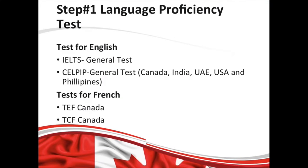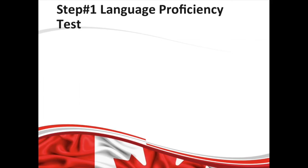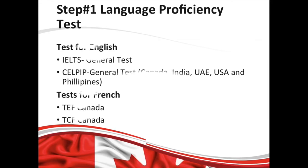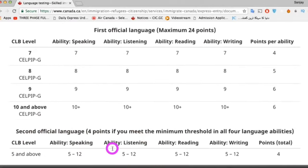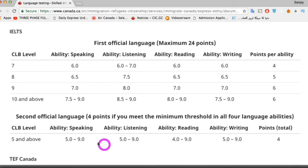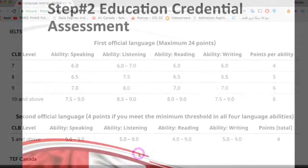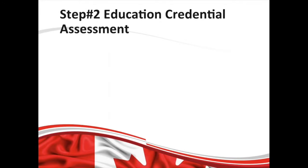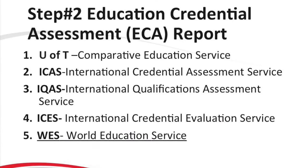First, you need to prove your language skills by taking an approved language test — either English or French. You can write both exams if you want, because it will increase your points. For both tests there are two options each, but please ensure the exam you want to write is available in your country. The score requirements are mentioned at cic.gc.ca.